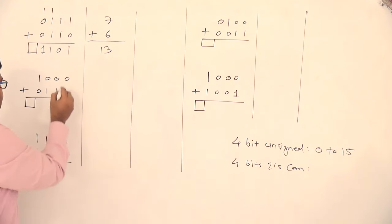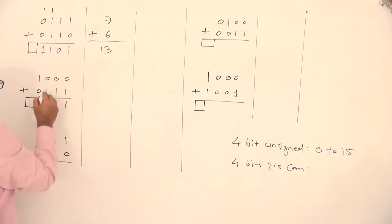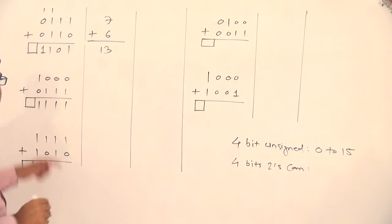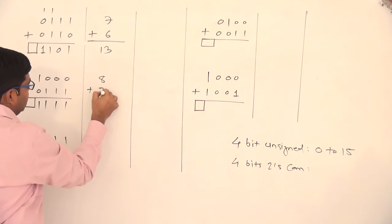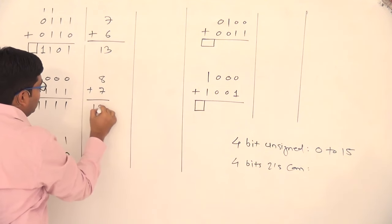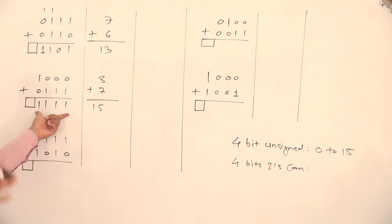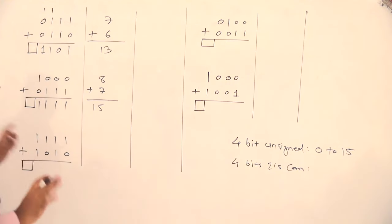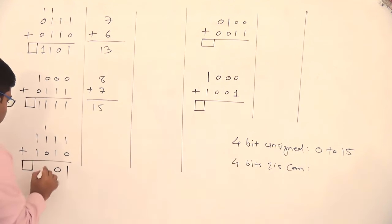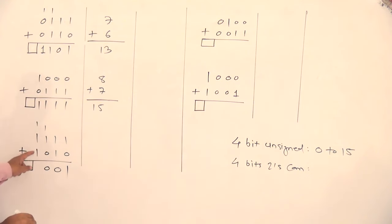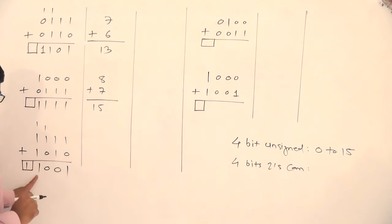Next example: 0 plus 1 is 1; 0 plus 1 is 1; 0 plus 1 is 1; 1 plus 0 is 1. So 1000 is 8 plus 0111 is 7, and 8 plus 7 equals 15, and the value of all 1s is also 15. Then: 1 plus 0 is 1; 1 plus 1 is 0 with carry 1; 1 plus 1 plus 0 is 2, meaning 0 with carry 1; and 1 plus 1 plus 1 is 3, written as 1 with carry 1.